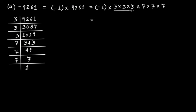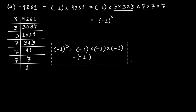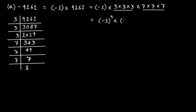This 3 appears 3 times and this 7 appears 3 times. Now, can we write minus 1 as minus 1 cubed? Because minus 1 cubed means minus 1 multiplied by minus 1 multiplied by minus 1. Minus 1 multiplied by minus 1 is positive 1, and 1 multiplied by minus 1 is minus 1. So yes, it can be written like that. And here you have 3 cubed and 7 cubed.